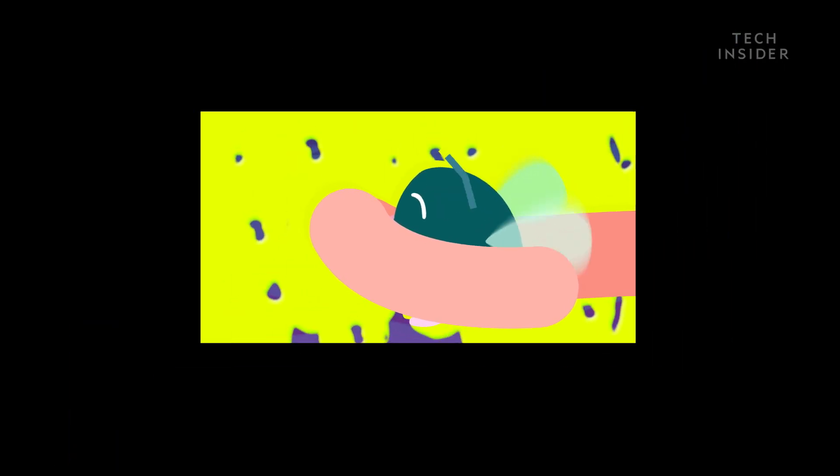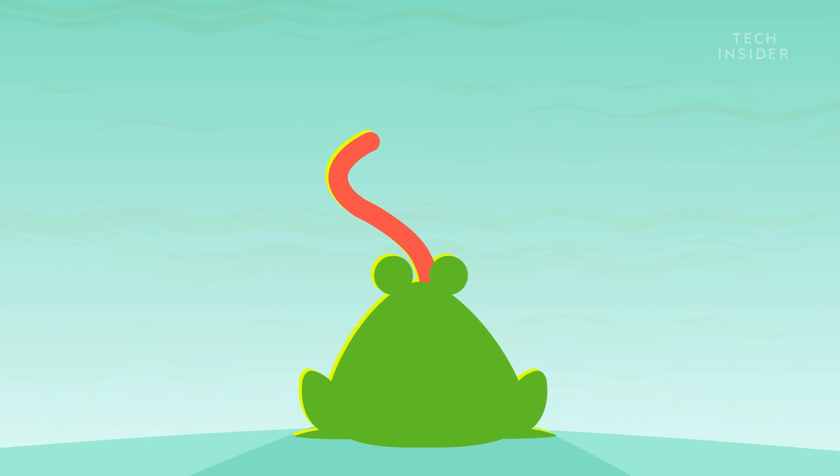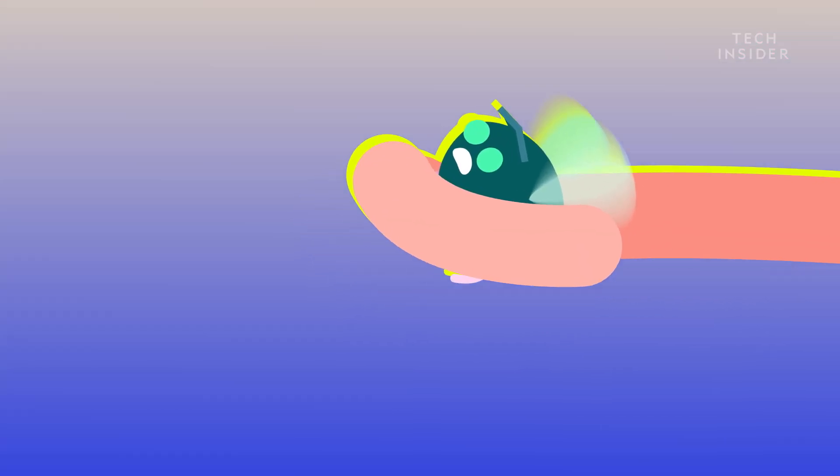This fly is going nowhere. All that's left to do is reel it in. The frog's retractor muscle yanks on the tongue, which zooms backwards like a bungee cord. Within 15 one-hundredths of a second, it disappears back into the mouth.